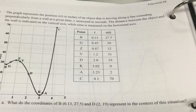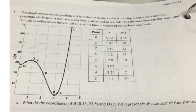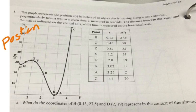It says here the graph represents the position, X of T, of an object. So that means the Y value is the position moving along a line extending perpendicularly from a wall at a given time, T, measured in seconds. So this would be time. The X values are time. The distance between the object and the wall is indicated on the vertical axis, while time is measured on the horizontal axis.